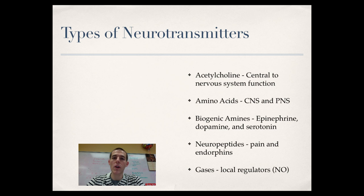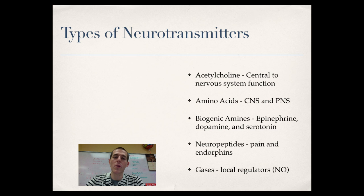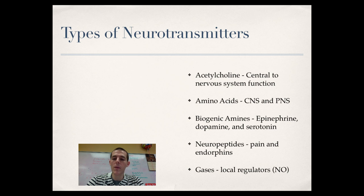You've got amino acids — just single amino acids. Remember, amino acids are hooked together to make proteins, but single amino acids can act as neurotransmitters in the central and peripheral nervous systems. There are biogenic amines, which are nitrogen-containing amino acids. Some examples are epinephrine, which we talked about when discussing the endocrine system, and there's dopamine and serotonin, which are responsible for mood control.